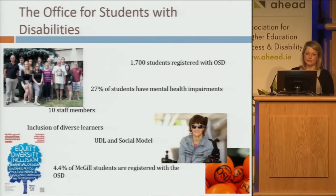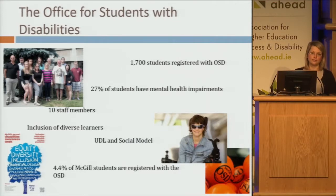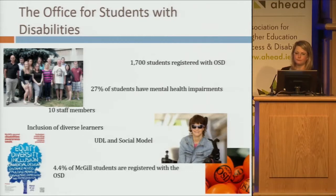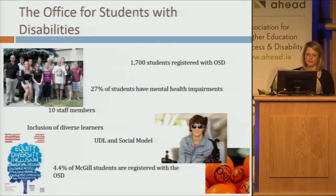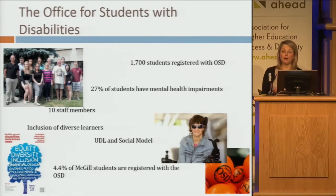The Office for Students with Disabilities has 10 staff members: two access advisors, one learning resources advisor. I'm currently the acting director. We have two access technologists, exam coordinators, and a person working the front desk. We have around 1,700 students currently registered with our services, which constitutes 4.4% of the McGill student population — that's quite high. Our mandate is the inclusion of diverse learners and promoting Universal Design for Learning and the social model of disability.